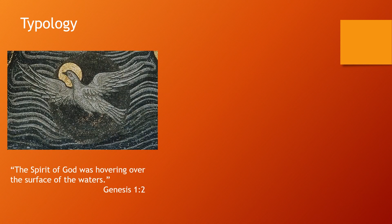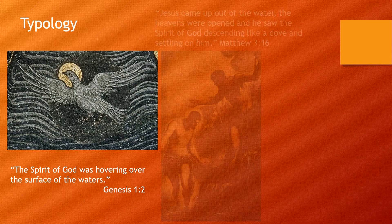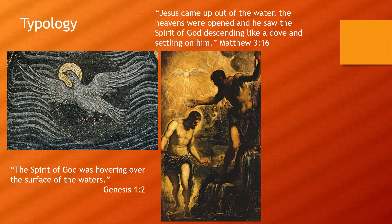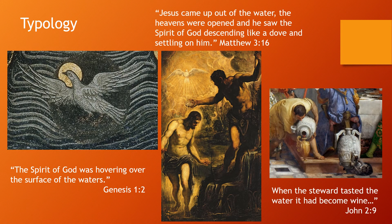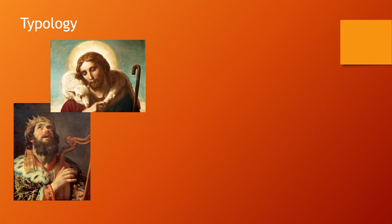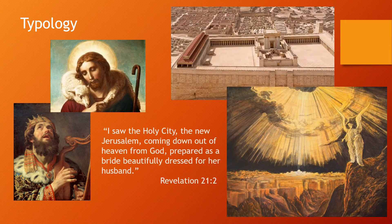The church uses typology to connect the Old Testament to the New. All realities in the Old Testament are images or types of Christ, his redeeming work, and the church. For example, the waters of creation point to the recreating water of baptism and the water Christ turns into the wine of his new life, while David, the shepherd king, is an image or type of Christ the good shepherd, and Jerusalem is the image of Christ's bride, the church.